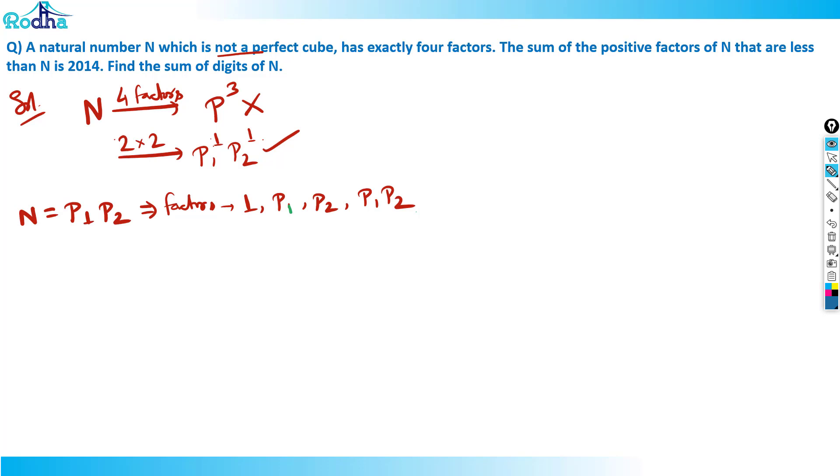It says the sum of positive factors of N that are less than N is 2014. This p1 times p2 factor is N itself. So factors less than N are one, p1, and p2. Therefore, one plus p1 plus p2 equals 2014, which means p1 plus p2 equals 2013.